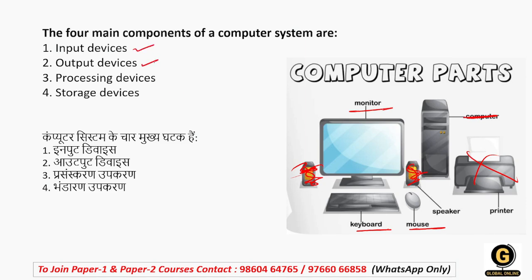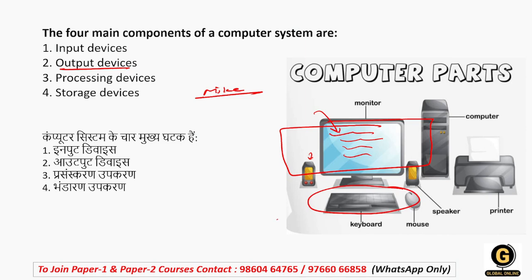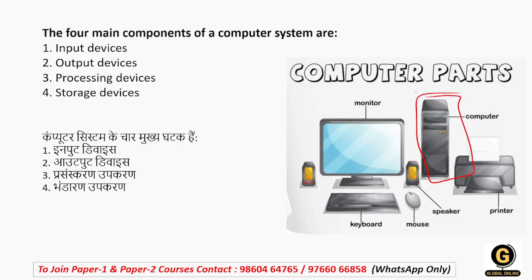अब इन सभी parts को detail में discuss करते हैं। Input devices वो devices होती हैं जिसकी मदद से हम data enter कर सकते हैं। जैसे मैं बोल रही हूँ, मेरी आवाज़ laptop के mic के through जा रही है — तो mic एक input device है। आप लोग जो screen पर session देख रहे हो उसमें आवाज़ बाहर आ रही है यानि output device से — जो कि speakers हैं। Monitor भी output device है। Keyboard और mouse दोनों input devices हैं।